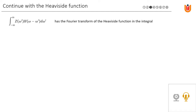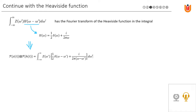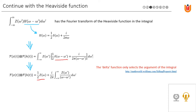This integral has the Fourier transform of the Heaviside function inside it. We can look that up: the real part of the Fourier transform is a delta function, and the imaginary part is a term inversely proportional to frequency. We fill this expression into the integral and get two terms. The delta function only selects the argument of the integral, so we can rewrite: the delta function contribution becomes Z(ω), while the imaginary part stays in integral form.